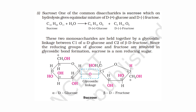Sucrose is a disaccharide made up of two monosaccharide units — glucose and fructose — joined by an alpha-glycosidic linkage. Sucrose is formed through an alpha-glycosidic bond between glucose and fructose.